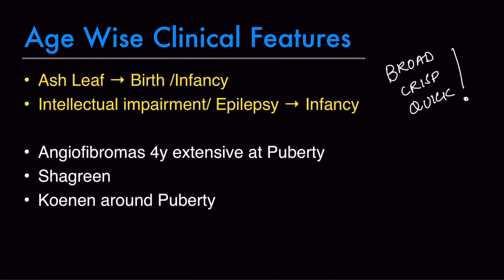It is important to know the age-wise sequence of cutaneous findings in tuberous sclerosis. Ash leaf macules, intellectual impairment, and epilepsy develop early — ash leaf macules may be present at birth or develop in infancy. Angiofibromas start developing around 4 years of age and become more extensive at puberty. The shagreen patch develops after angiofibromas, and Koenen tumors develop around puberty.